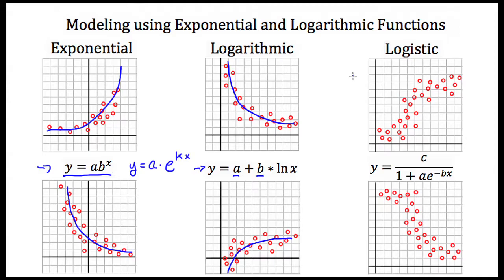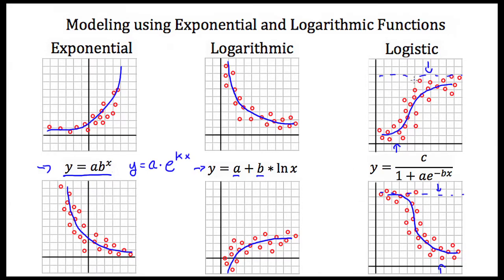Our last type of model is a logistic model. Logistic scatterplots would look something like these two examples — typically your trend line would look sort of like an S. What's important with logistic models is that they have a minimum value and a maximum value. So if what you're measuring has a minimum and a maximum value and your scatterplot looks something like this, you may consider using a logistic model.